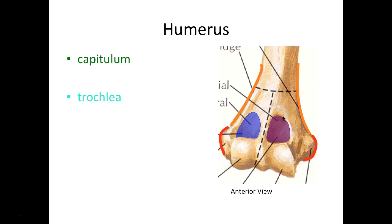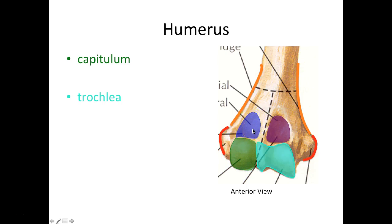Below these fossae we have two other structures. The capitulum is nice and round — the word capit always refers to head, so we have a head-shaped structure here. The head of the radius will rotate around the capitulum and articulate with the radial fossa. On the medial side, the trochlea was named after a spool — this term means spool. The trochlea is found on that medial condyle, and the ulna rotates around this trochlea while the coronoid process of the ulna articulates with the coronoid fossa.